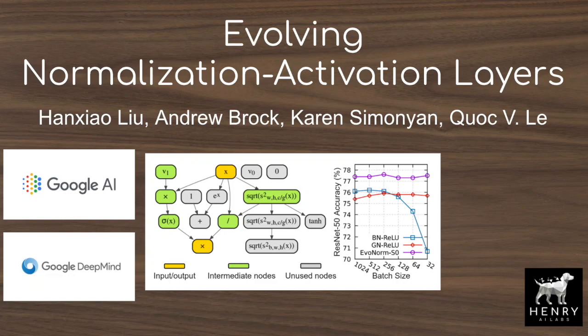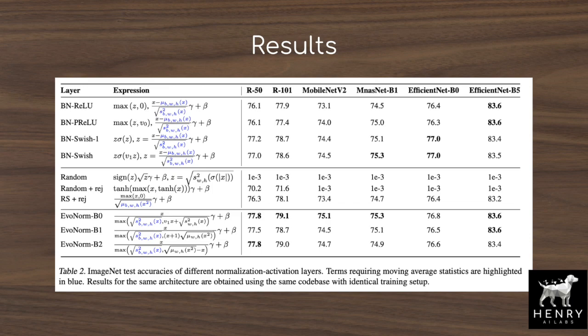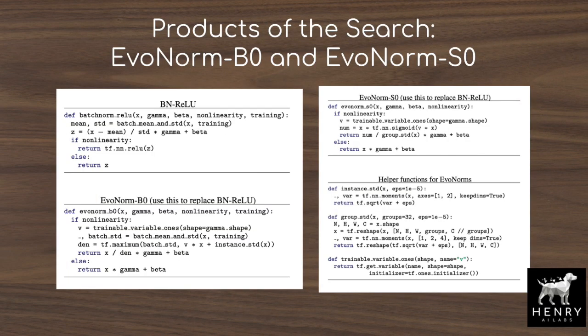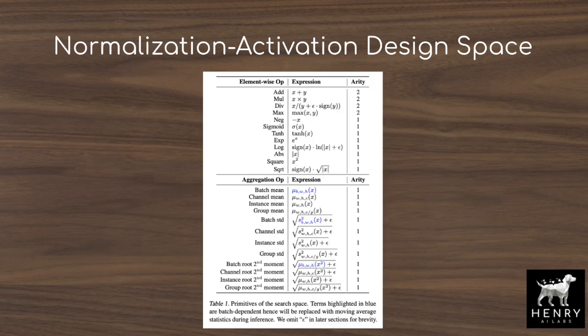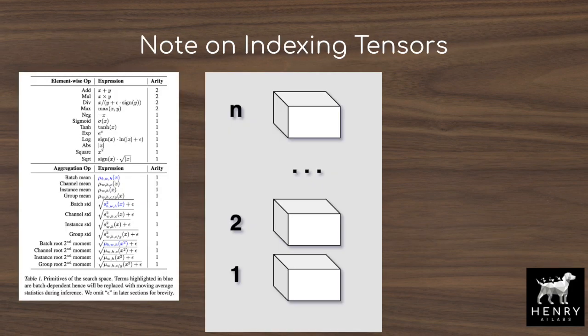This video explains a large-scale AutoML experiment from researchers at Google and DeepMind. The common practice in training deep neural networks is to interleave convolutional layers with batch normalization followed by a ReLU activation. This study parameterizes the space of normalization activation layers and finds the EvoNorm B0 and S0 layers. A ResNet-50 with batch norm ReLU achieves 76.1% ImageNet accuracy, whereas using the new custom EvoNorm layer achieves 77.8% accuracy.